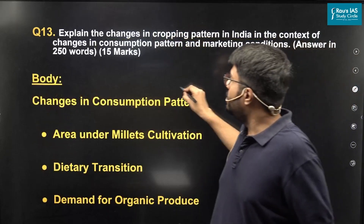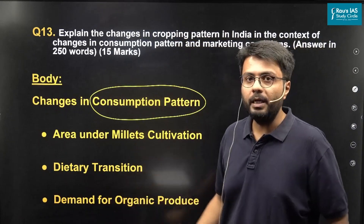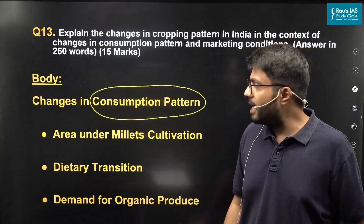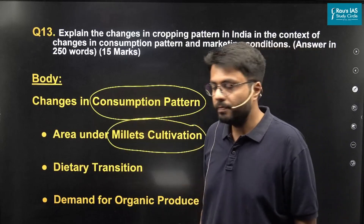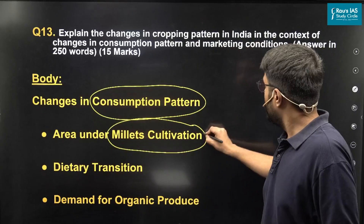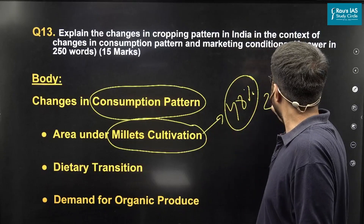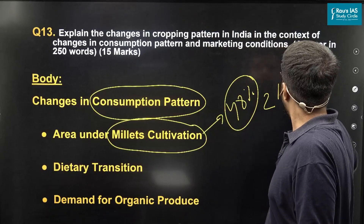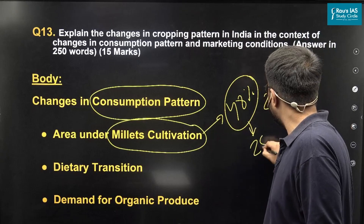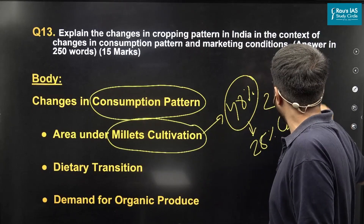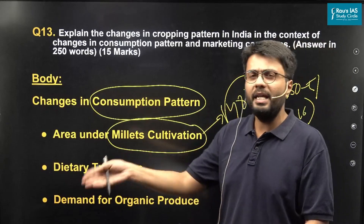Let us first understand changes in consumption pattern. The first important development is that we have seen a reduction in millet cultivation since independence. Millets constituted about 48% of total crops grown in the country in 1950–51. However, this reduced to about 25% in 2016. This drop in cultivation of millets can be attributed to many different factors.